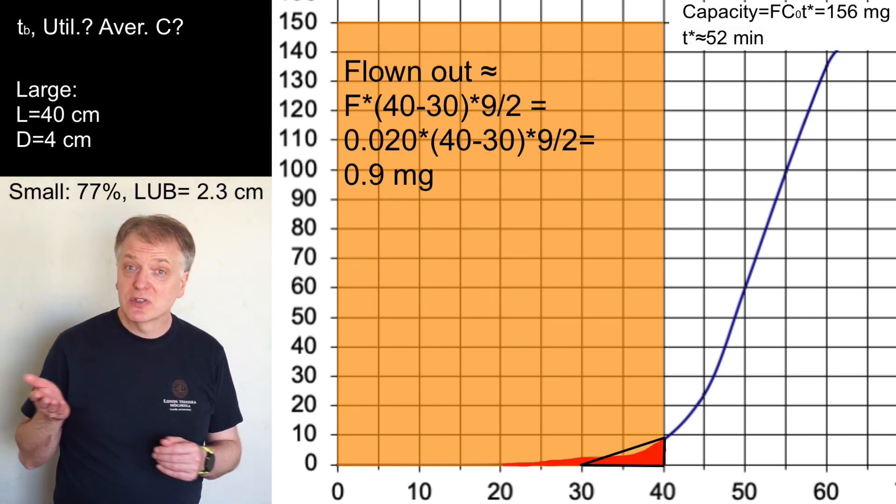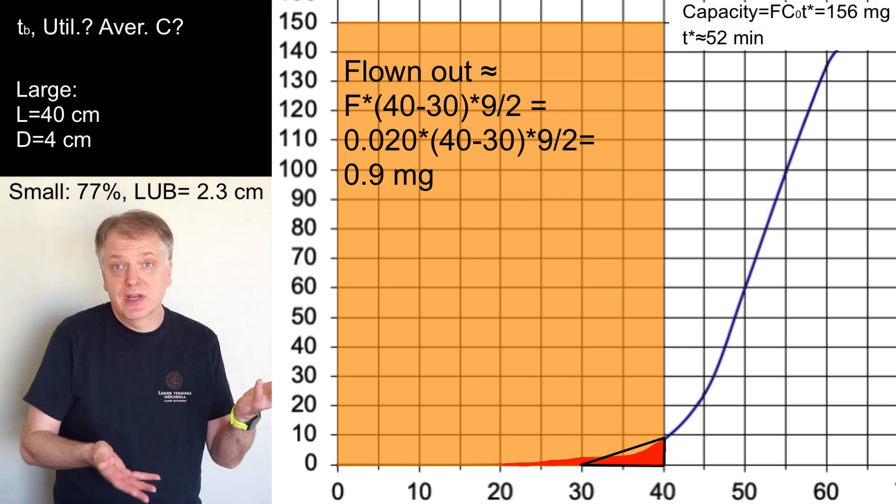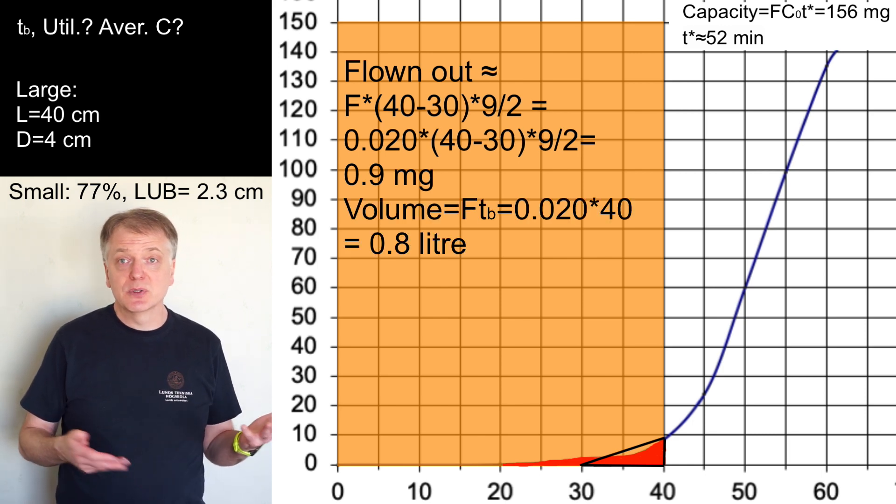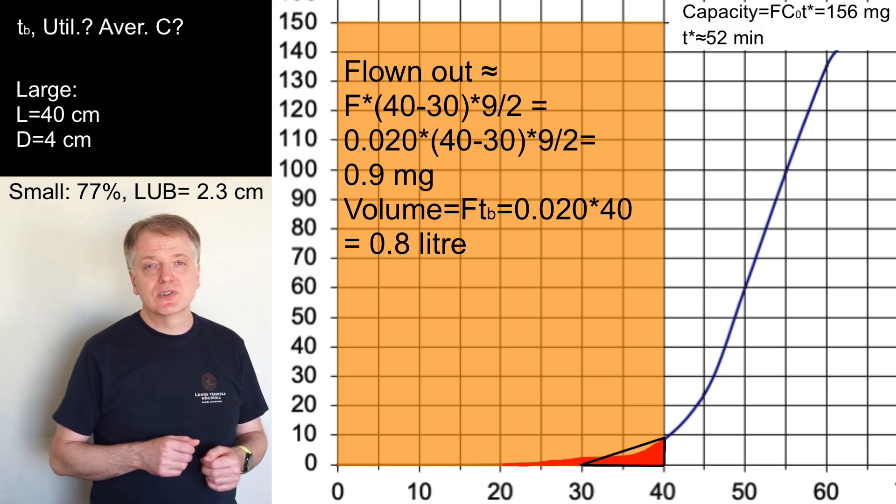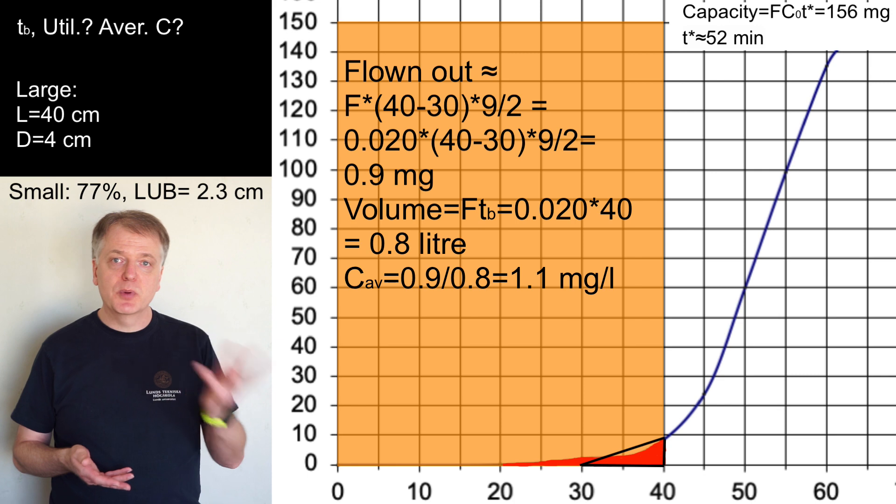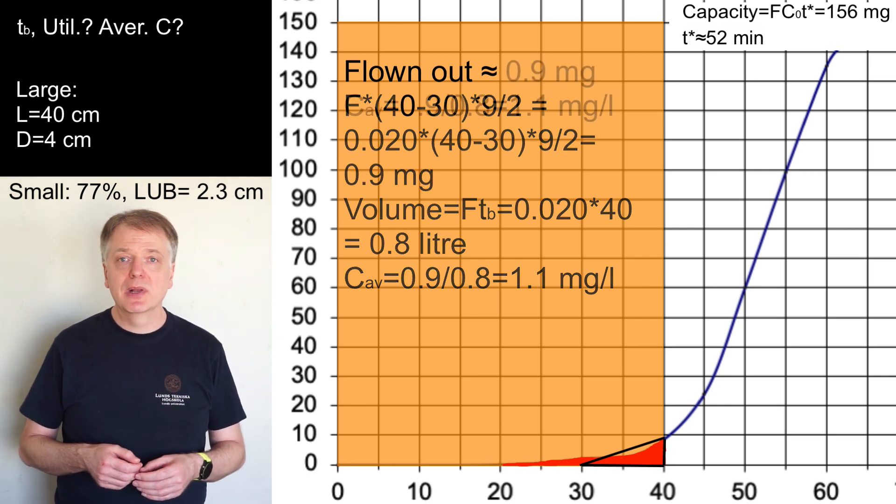The average concentration in the outlet is the amount divided with the volume that has flowed out. And that volume is simply the feed flow rate times TB. So 20 times 10 to the power minus 3 times 40 which equals 0.8 liters. We get the average concentration as 0.9 milligrams divided by 0.8 liters which gives us 1.1 milligram per liter.